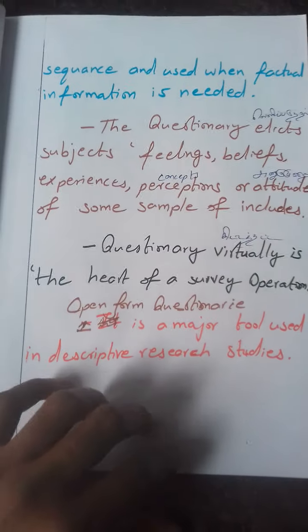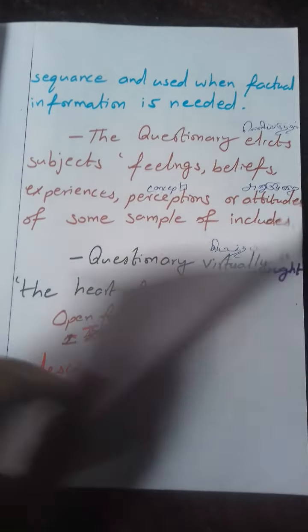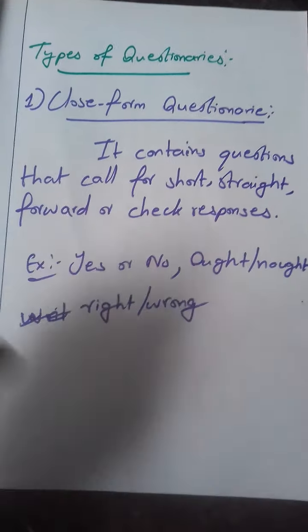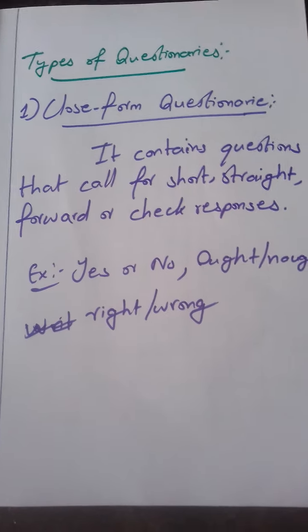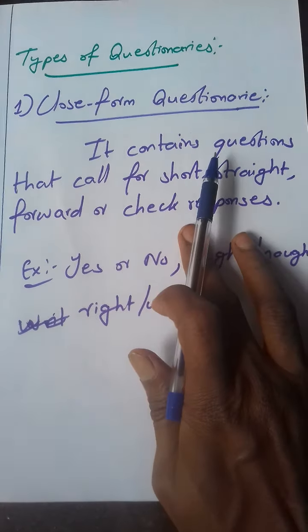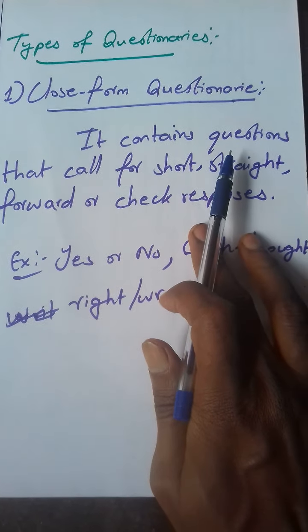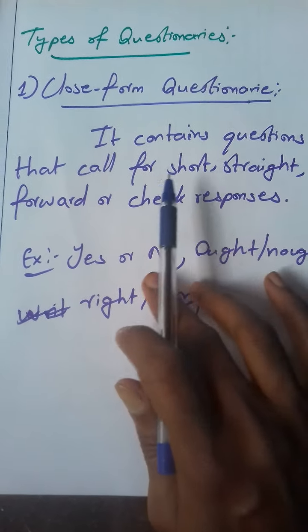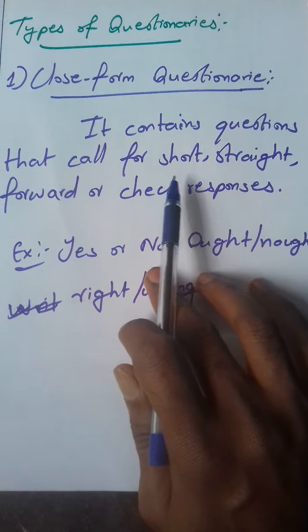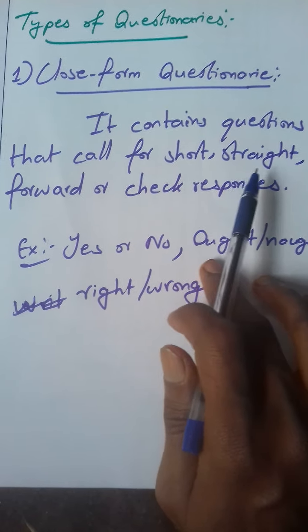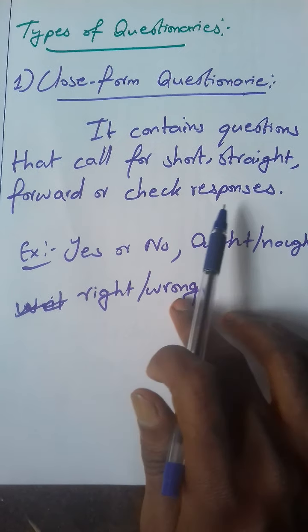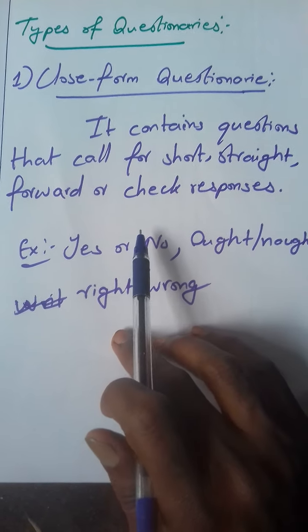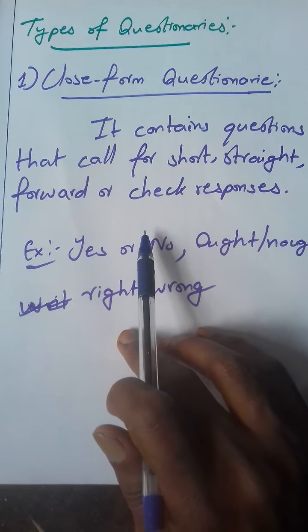There are two types of questionnaires: one is closed form, and the other is open form. What is closed form? It contains questions that call for short, straightforward, or check responses.